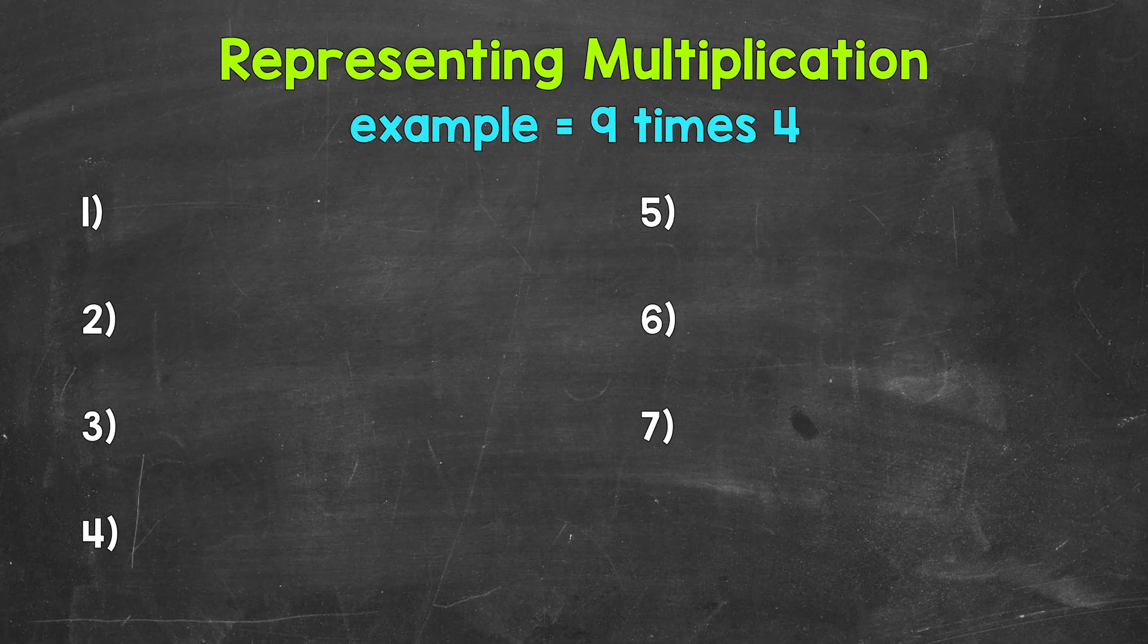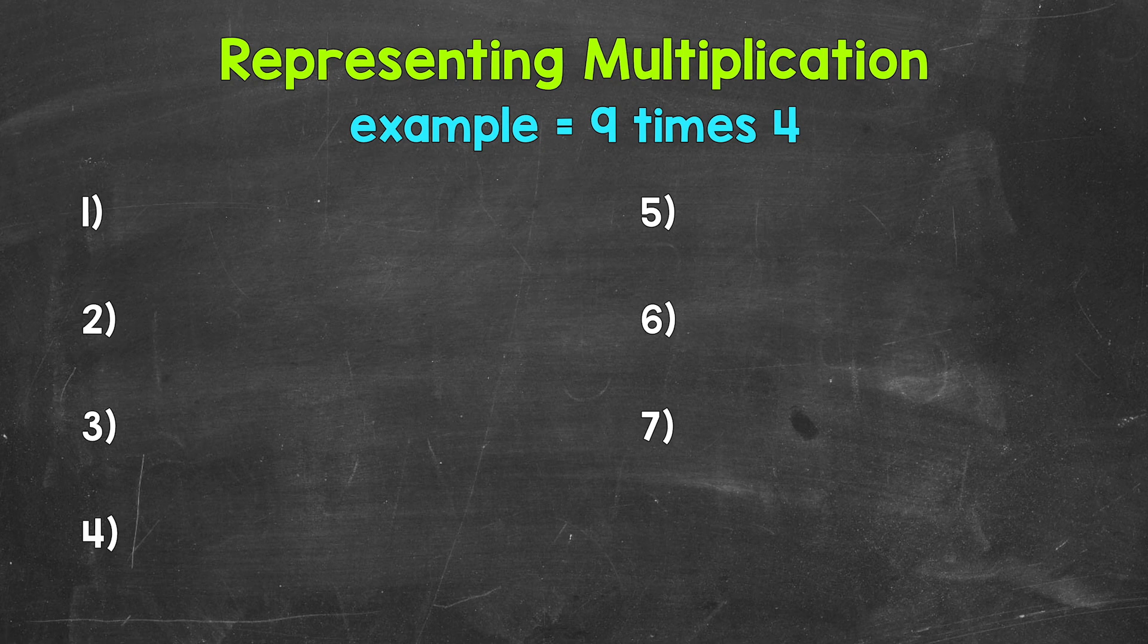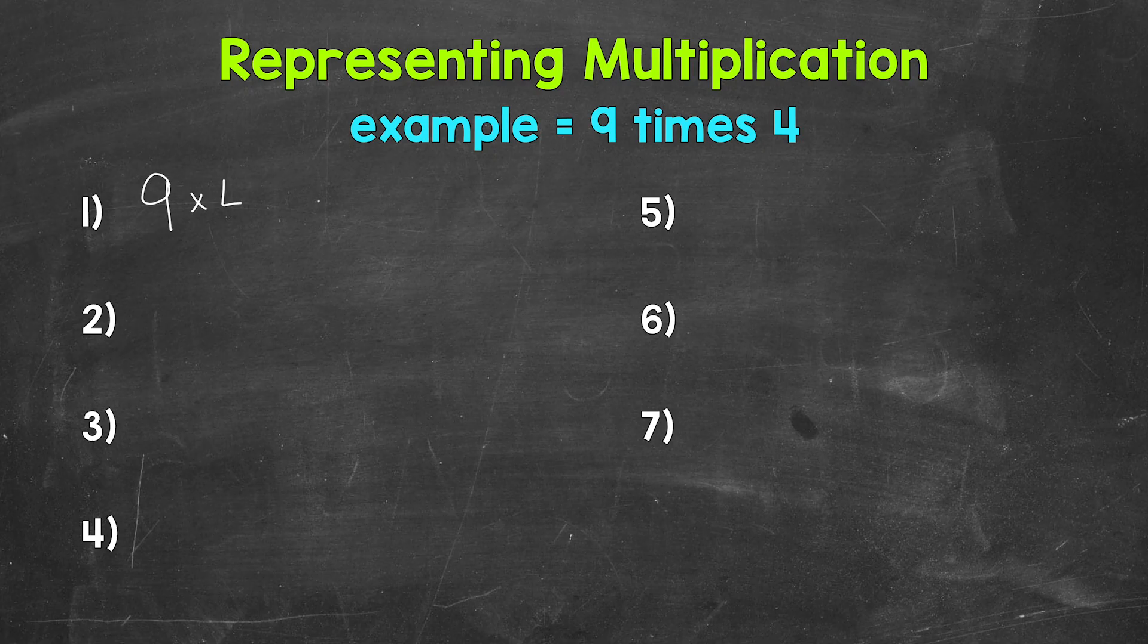Now for all of the examples, I'm going to use nine times four. Let's jump into number one, and I'm going to write nine times four using an x. This is probably the multiplication sign we are most familiar with and introduced to first. So nine times four.